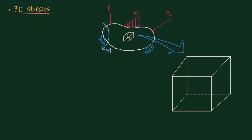This is the same element drawn at a larger scale. We are trying to understand the various stresses on its faces. Let me name the axes. This particular face perpendicular to the x-axis is called the x-plane. The horizontal plane perpendicular to the y-axis is the y-plane. The plane perpendicular to the z-axis is called the z-plane. So the plane is named based on the concept that it is perpendicular to that particular axis.